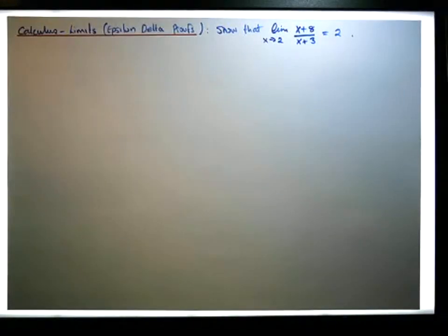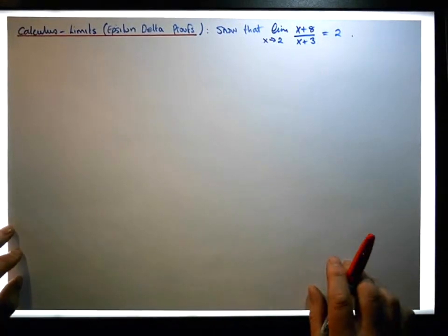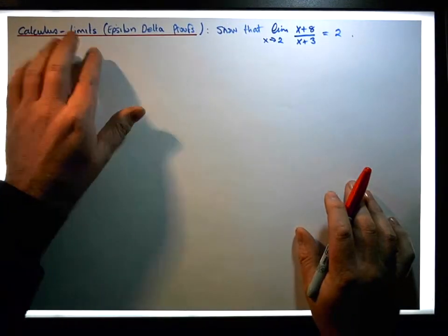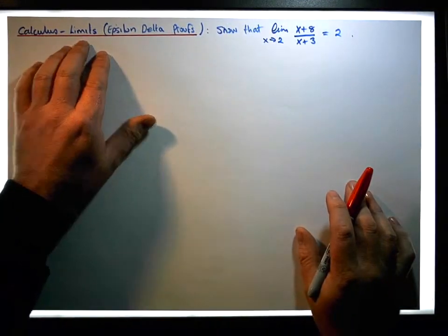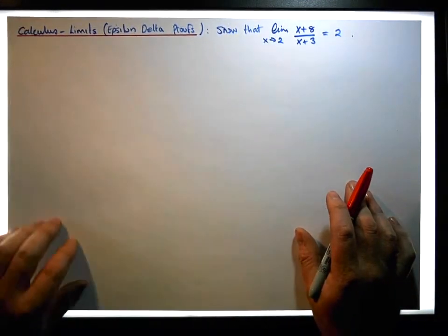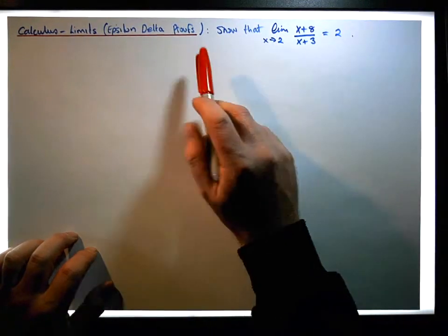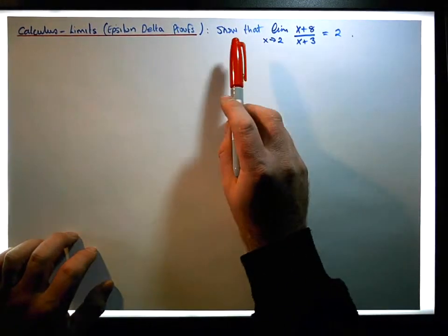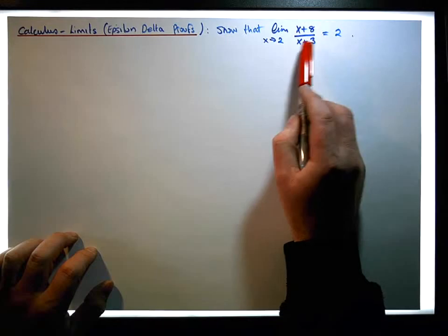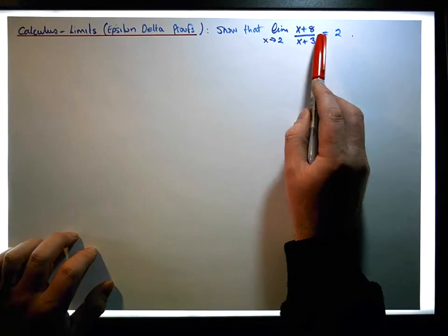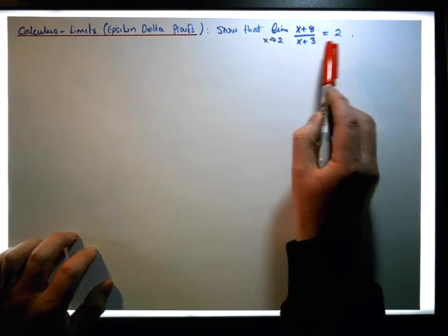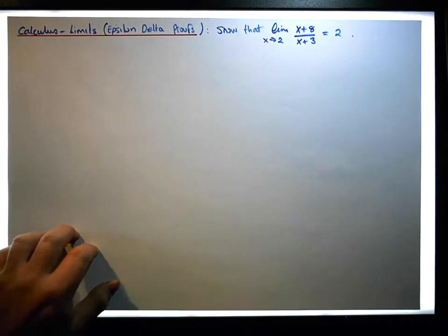Hi guys, this is Jonathan Lambert with Maths and Stats. In this video, another in our series dealing with calculus and in particular epsilon-delta proofs, we're going to attempt to show using an epsilon-delta argument that the limit of the rational function (x plus 8) all over (x plus 3) as x tends to 2 is in fact equal to 2.